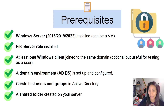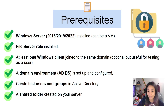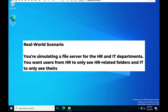Before we get started with the hands-on lab, here are the prerequisites if you want to follow along: a Windows Server (can be a VM), the File Server role installed, one Windows client joined to the same domain, a DNS setup configured, test users and groups in Active Directory, and a shared folder to apply access-based enumeration. For our real-world scenario, we'll simulate a file server for HR and IT departments, where users from HR only see HR-related folders and IT only sees theirs, even if all folders are inside the same shared directory.